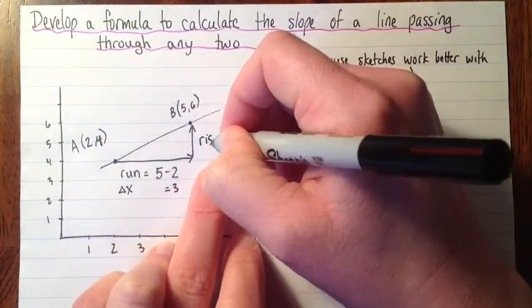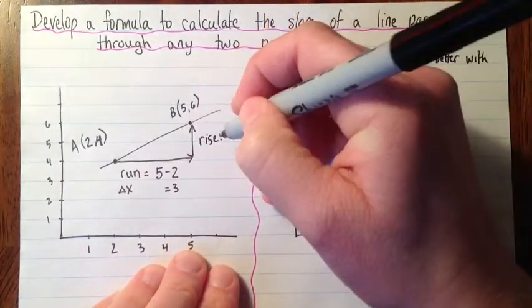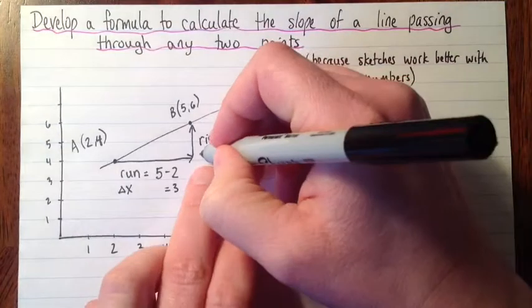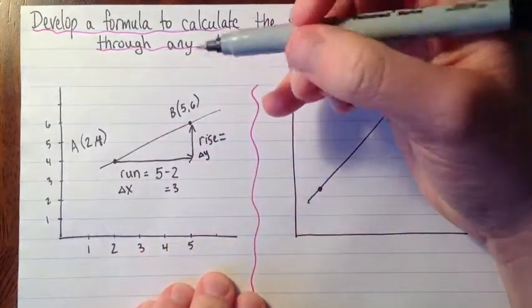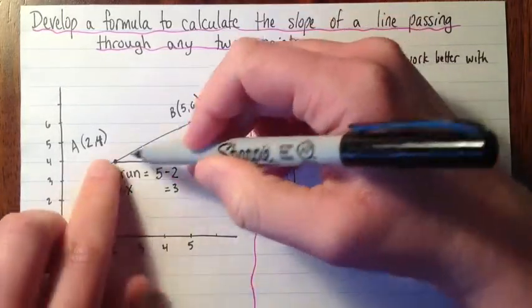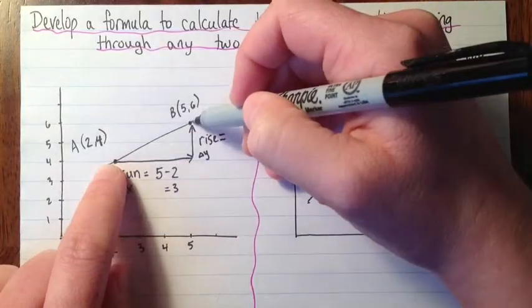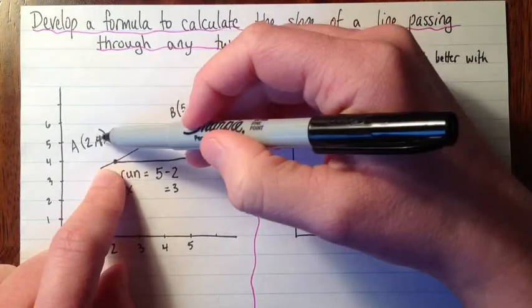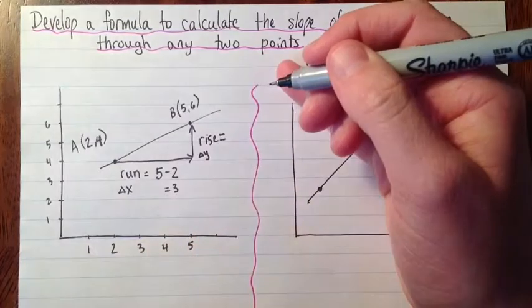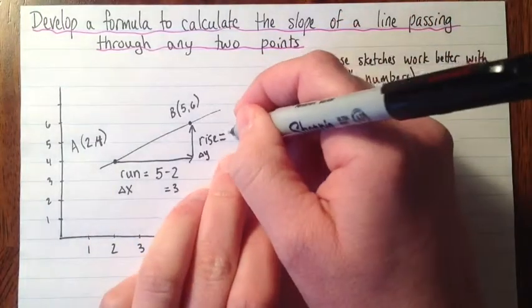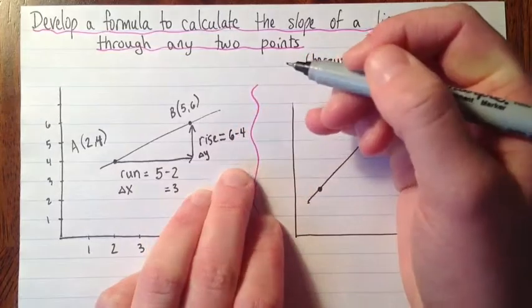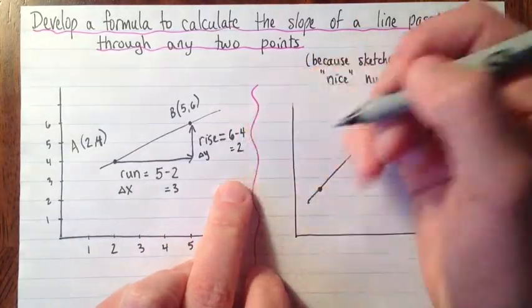The rise here is going to be similar. The rise is the change in the Y's. I'll put delta Y here too. So the rise is how much do we go up to get from point A to point B? So how far is it from 4 to 6? So again, probably everyone knows the answer. But what we could do if we didn't, is we could do 6 take away 4. And that's 2.